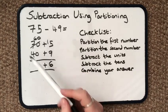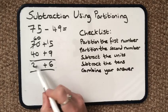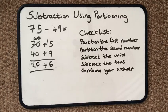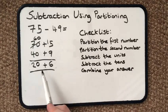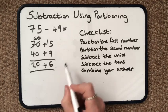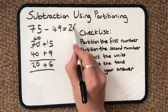Then I'd carry on. I do subtract the 10s. 6 tens take away 4 tens is 2 tens. Then I combine my answer. 20 and 6 is 26. And there's my answer.